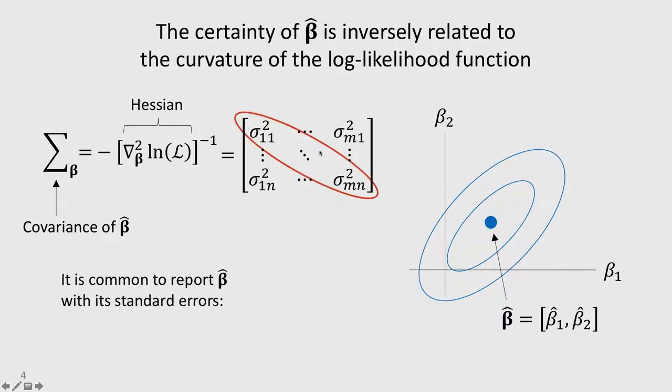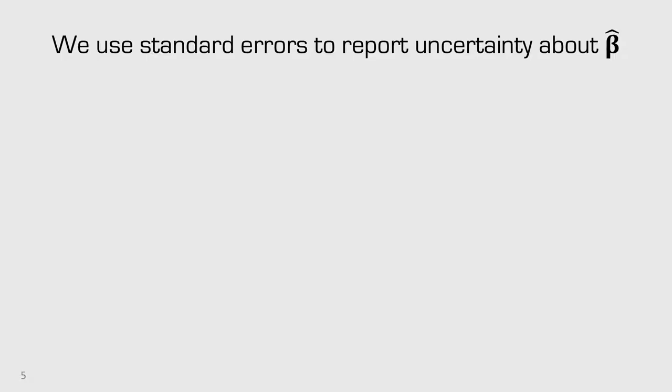Oftentimes, when we report our results, we'll just report the sigma terms that come off the diagonal of this covariance matrix. So you'll see tables like this, where you have your estimates of your different coefficients for beta, and there's standard error, which is the square root of each of these terms along the diagonal. We'll use these terms to report uncertainty about beta.